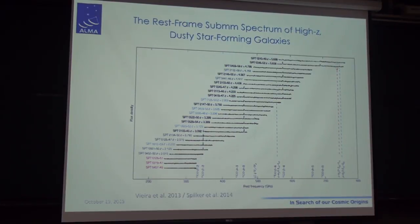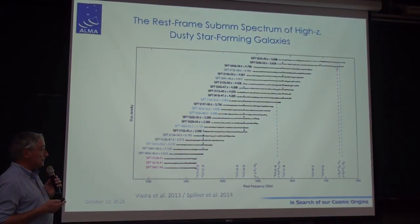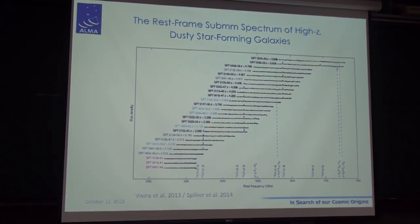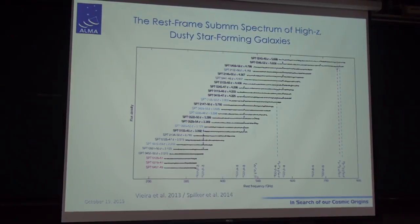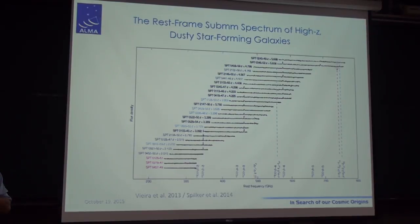Those are highly obscured galaxies, so it's impossible to do it from the optical. What is also interesting is that all these observations for all of these galaxies were done with something like 16 antennas and took about 10 minutes of observational time. So it's a fantastic machine to probe the high-z universe.